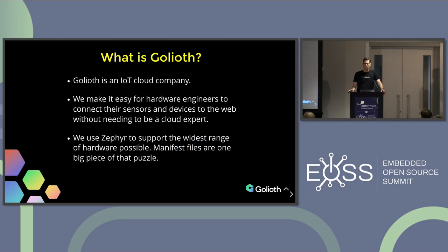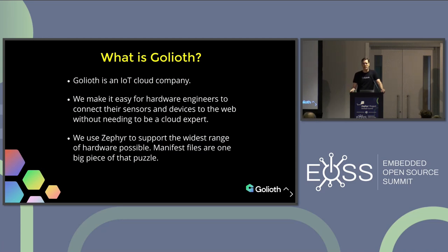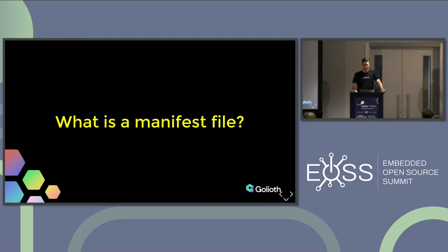One of the things we kept running into, as a totally remote company, is: is this Zephyr project going to build on my computer, my colleague's computer, and our customer's computer? And more importantly, for Zephyr Developer Summit last year, we spun up a bunch of hardware demos. Zephyr was at version 2.7 back then and now it's at version 3.5. I guarantee none of those demos will build if we just pull Zephyr up to 3.5 without changing the code — and that's a real problem. We really wanted a way to lock each of our code repositories to a specific snapshot of Zephyr and all the modules they use, and that's what manifest files do.